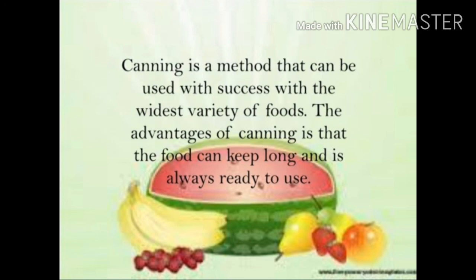In the canning method, we store food in jars or in a can. After sealing, we heat the can enough to destroy microorganisms. We then keep the sealed can as is, and whenever we want to eat that food, we open it. Food substances such as jam, fish, fruit, and vegetables are generally canned and sold in the market.